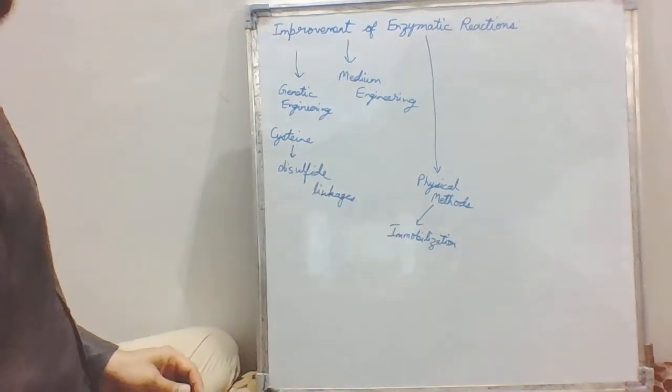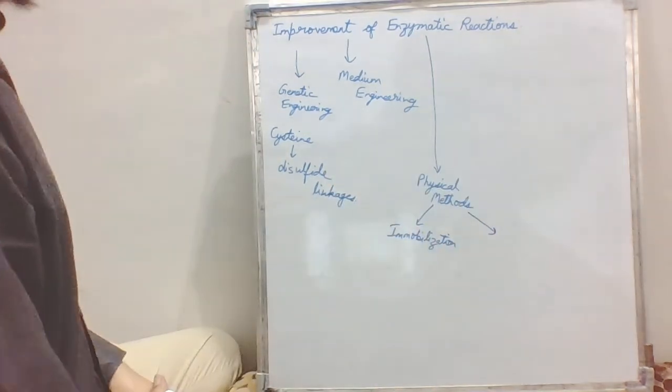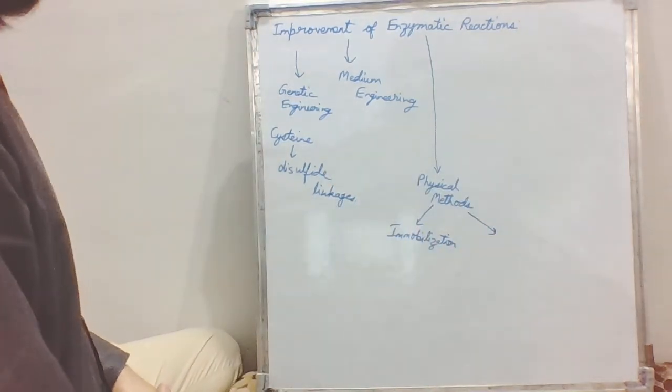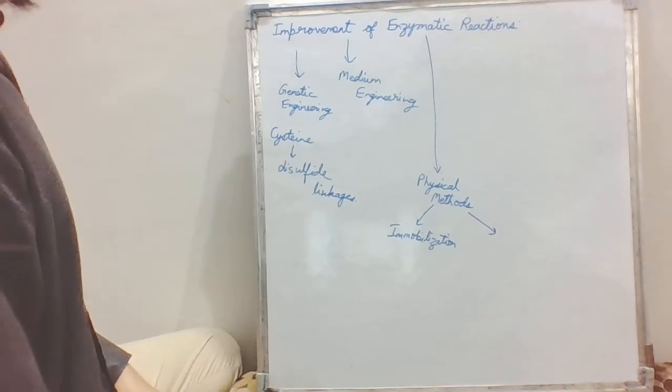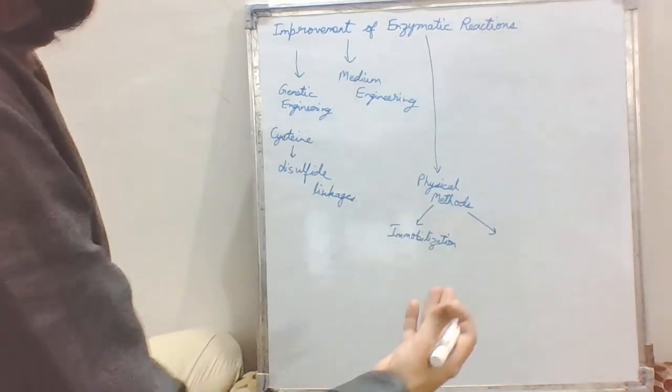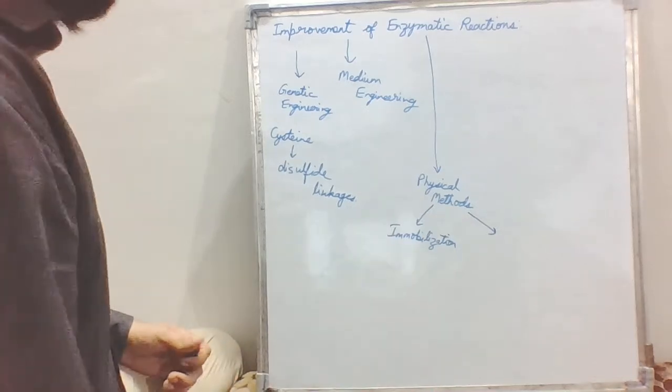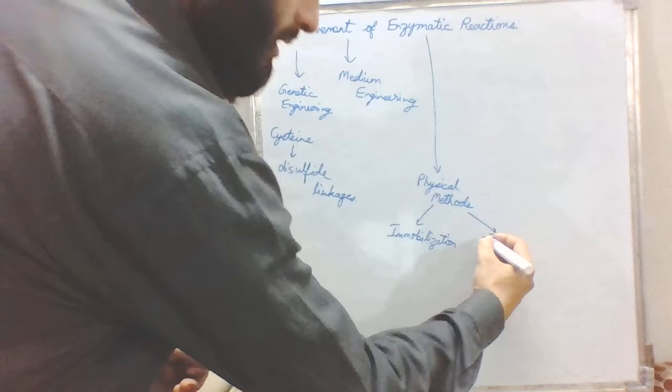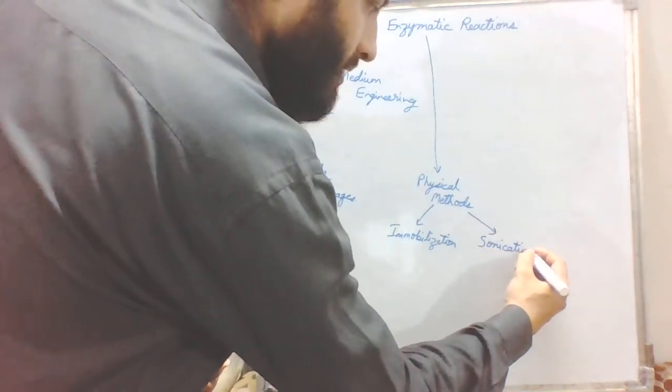Another method is using various irradiation techniques to improve the enzymatic reactions. Although high energy radiations would not be very beneficial, sound waves, which are mechanical waves, impart agitation as well as energy to the system. It has been observed that the rate of enzymatic reactions can be enhanced by designing sonication methods.